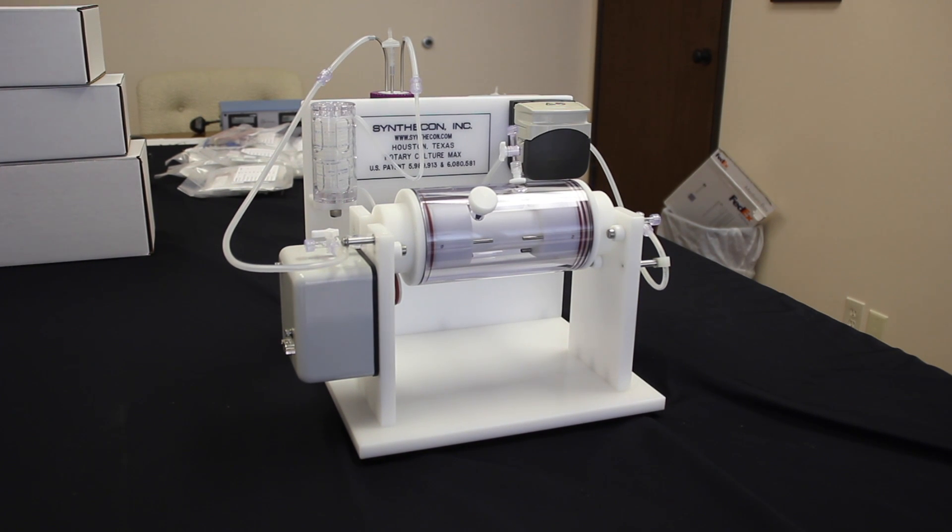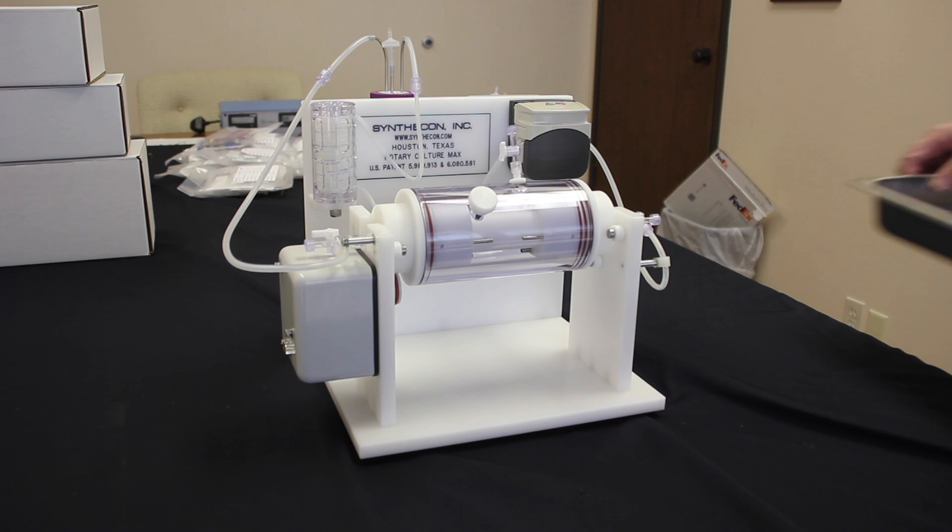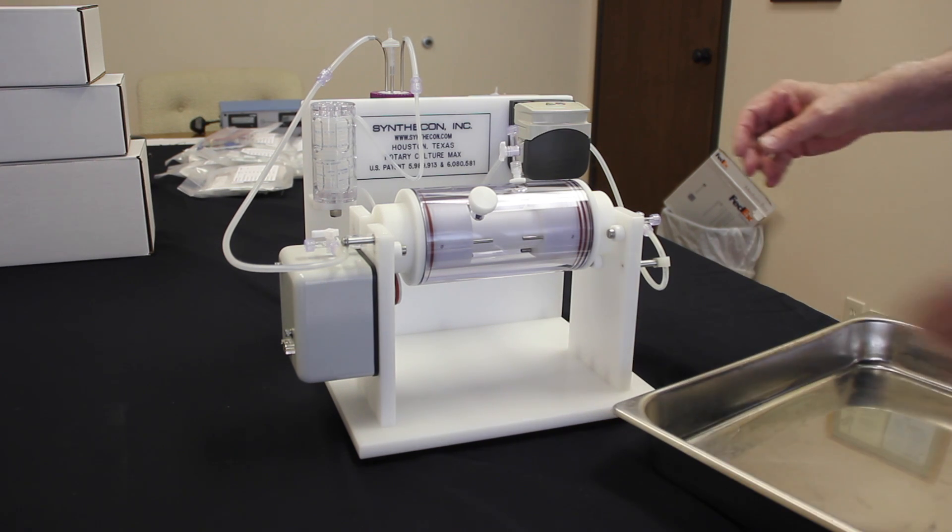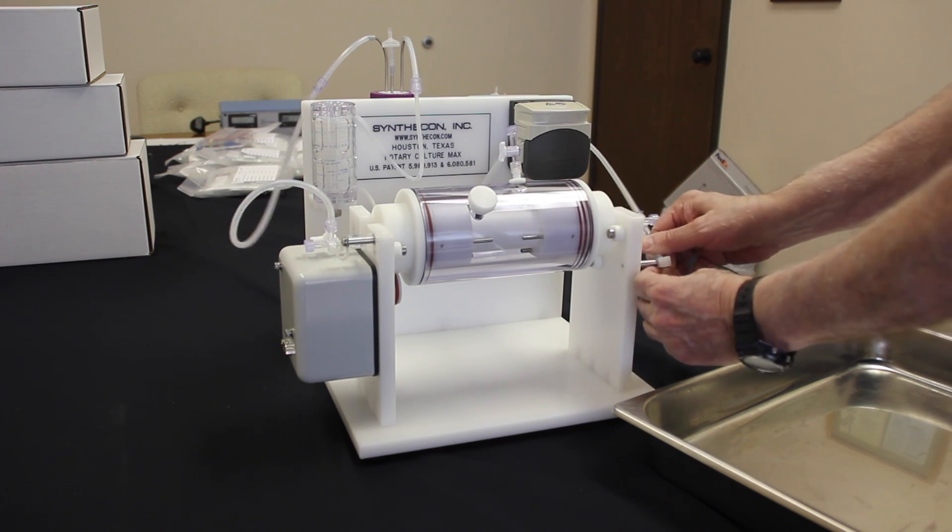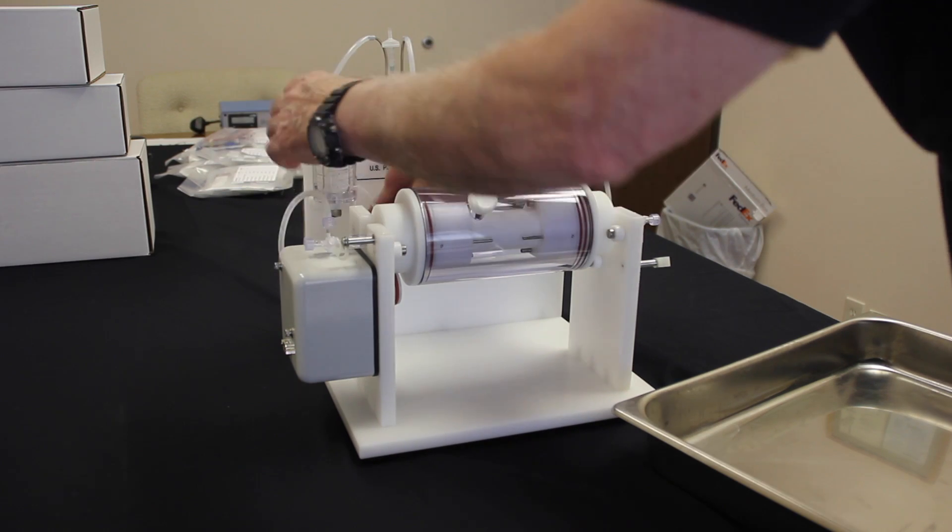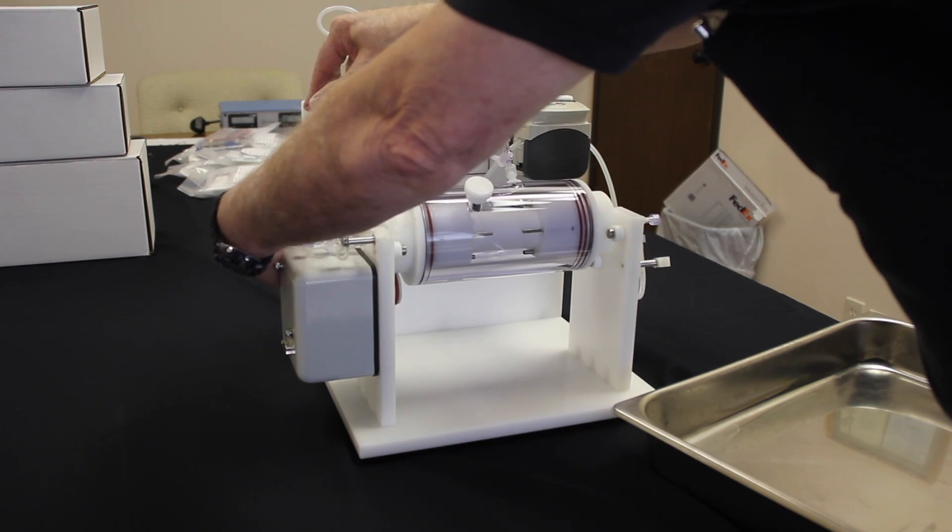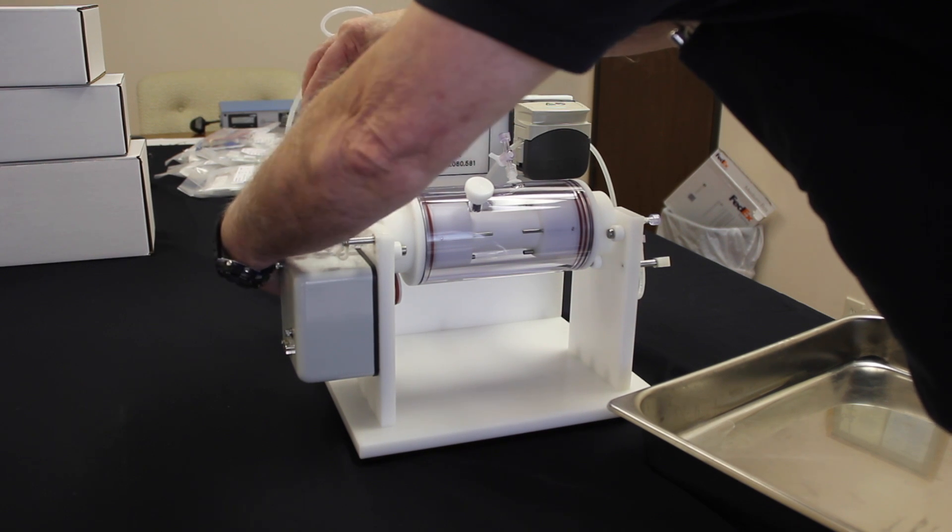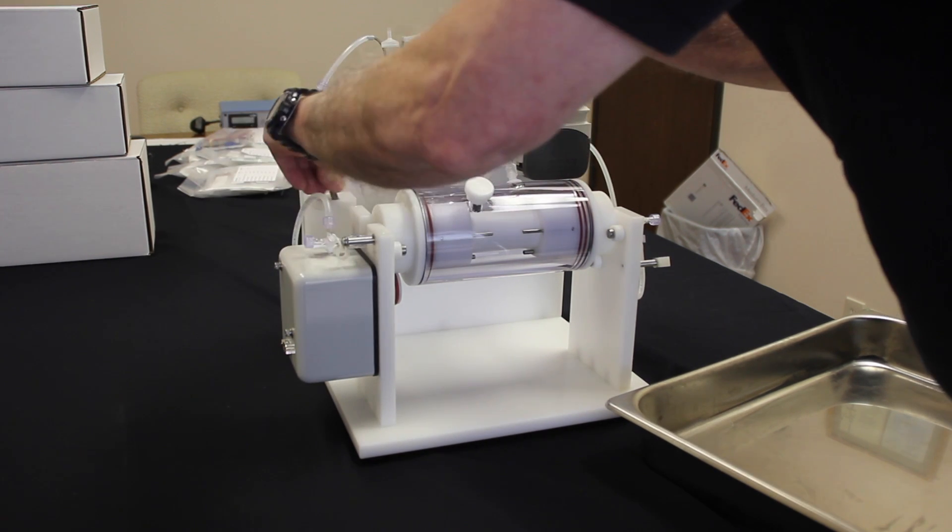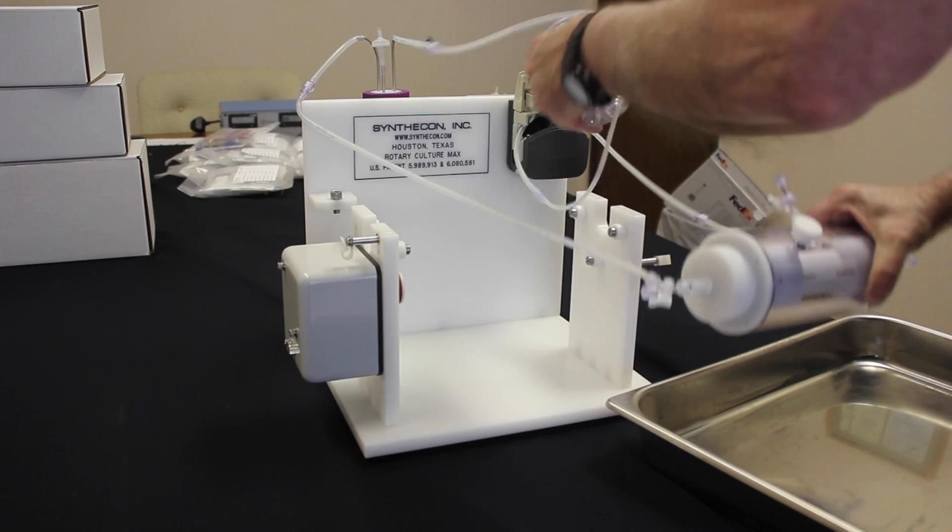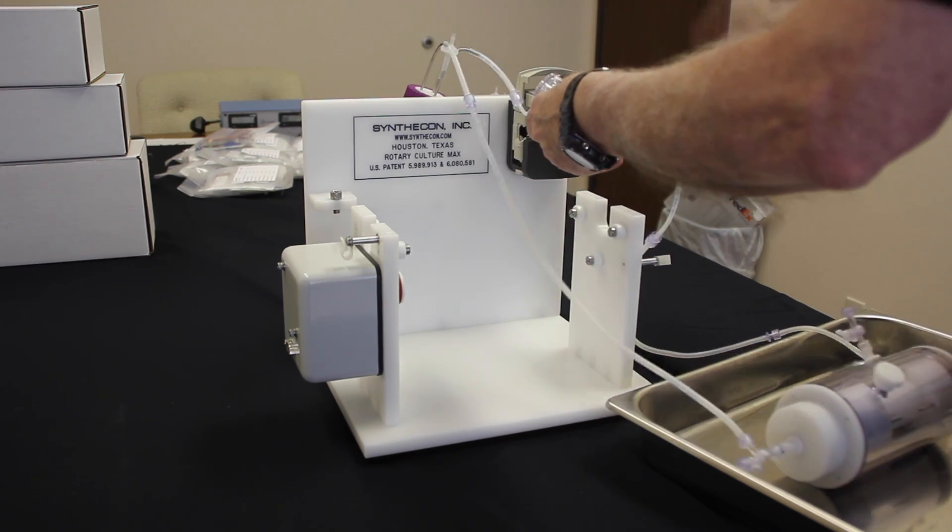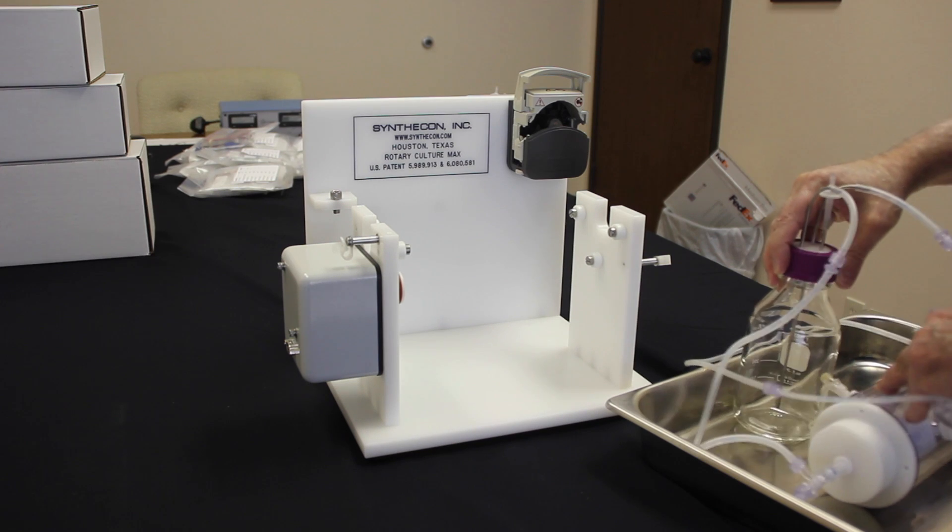So now, the vessel has been operating and you've had your culture and you're ready, after however long, to change the media. First, you can use your tray to either remove the entire rotator base or merely the whole flow loop off of the rotator base. This assembly will then be placed in your tray to be carried to your hood to swap out the media. It is important that the entire assembly is removed to maintain sterility.